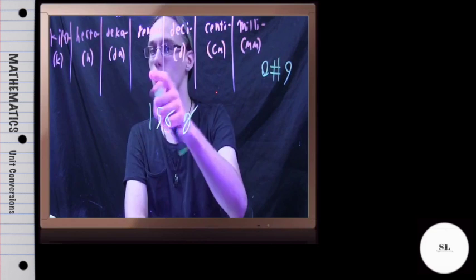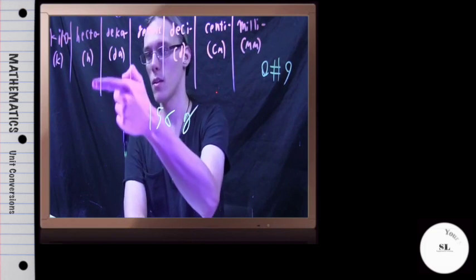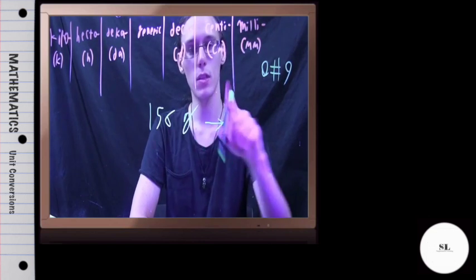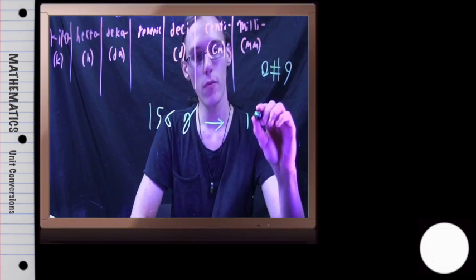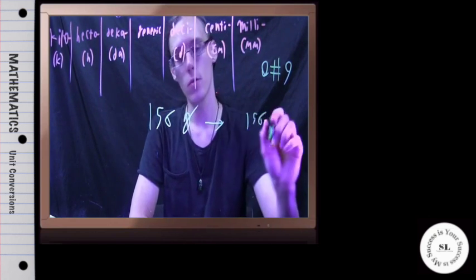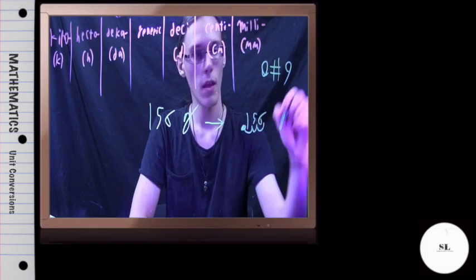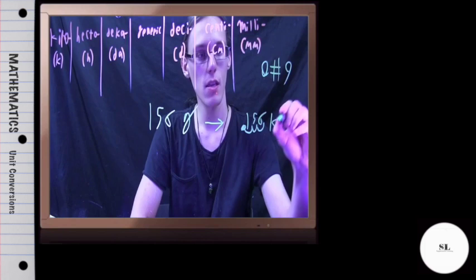once again I need to go three to the left. So grams to kilograms, here's my 156, the decimal is at the end so one two three and we get 0.156 kilograms.